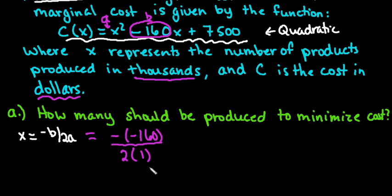I really don't even have to write it, but just so you know what I plugged in for a. If we simplify this, if I have negative negative 160 divided by 2, this is really 160 divided by 2, which is positive 80, and remember that this is thousands.